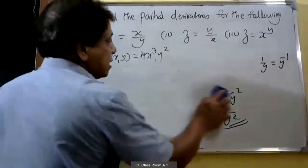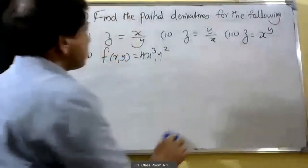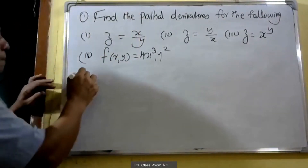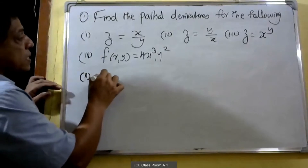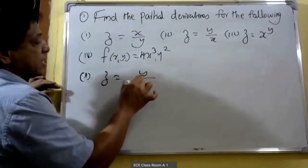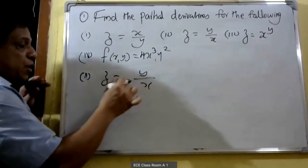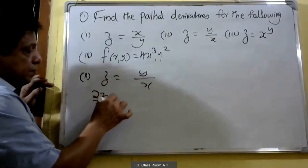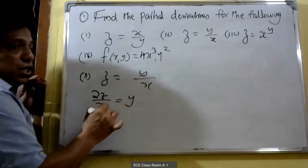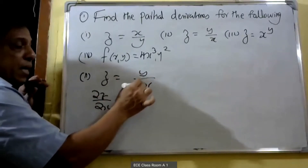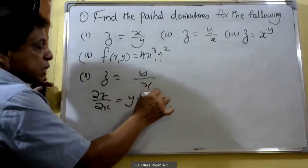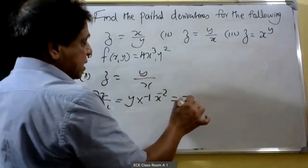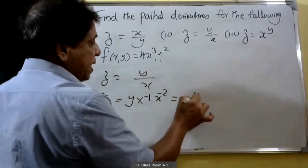That is the first problem. Second problem: z is equal to y divided by x. Partially differentiating with respect to x — in that case, y is a constant — y into 1/x, that is minus 1, into x raised to minus 2. That is, ∂z/∂x = minus y by x square.